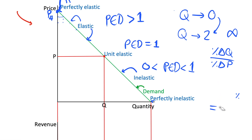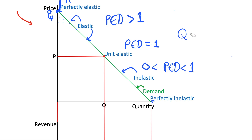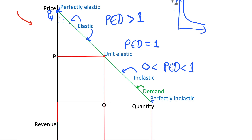So the key point is that price elasticity of demand changes along a straight-line demand curve. If we had a curved demand curve we don't necessarily need this to be the case — we can have constant elasticity on a curved demand curve. But since we draw demand curves as straight lines, we have elastic demand at the top, unit elastic at the midpoint, and inelastic towards the bottom right.